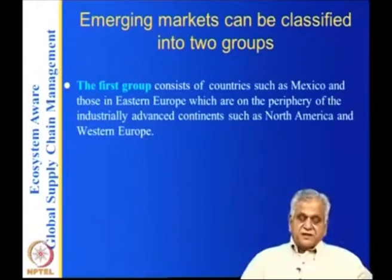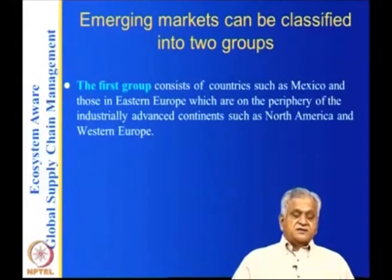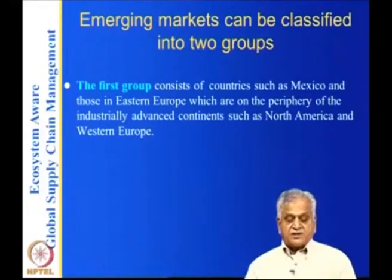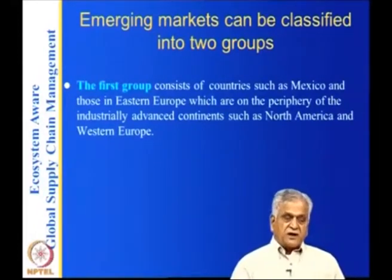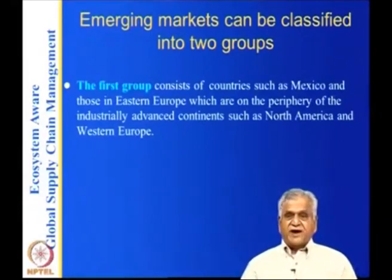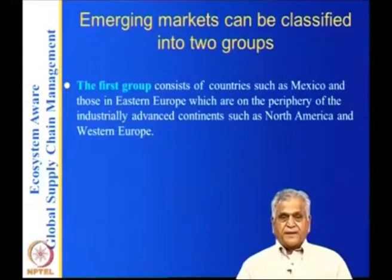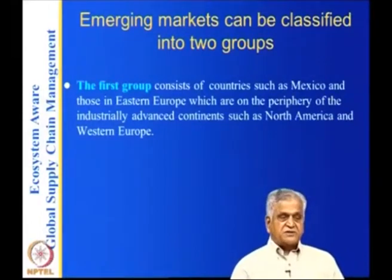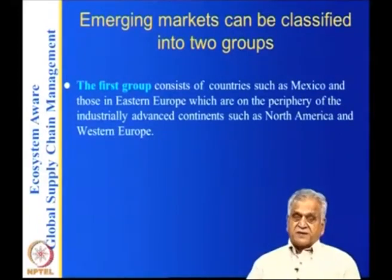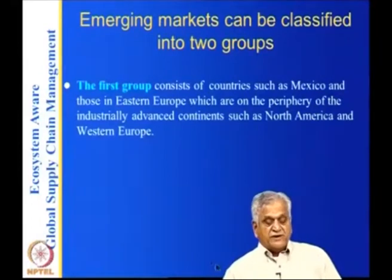There are basically two kinds of emerging markets. The first group consists of countries such as Mexico, China, and Eastern Europe, which are in the periphery of industrially advanced countries such as North America and Western Europe. Mexico, for example, is on the border of the United States, so many companies in the United States set up factories in Mexico using NAFTA — the North American Free Trade Agreement — to produce products cheaply and send them across the border to the United States.